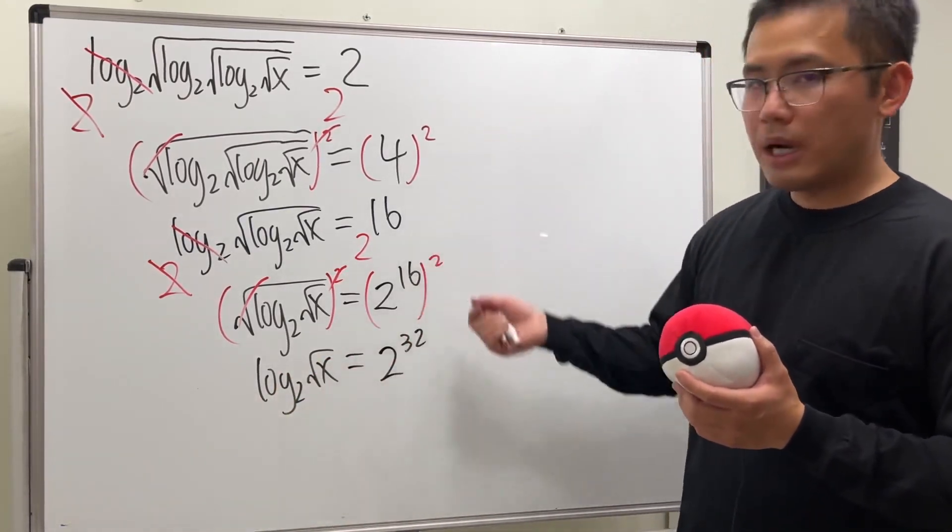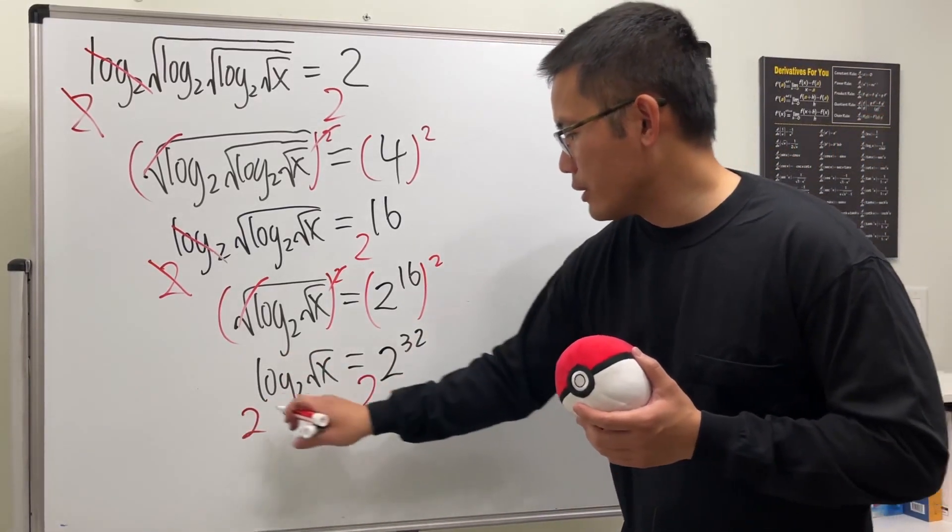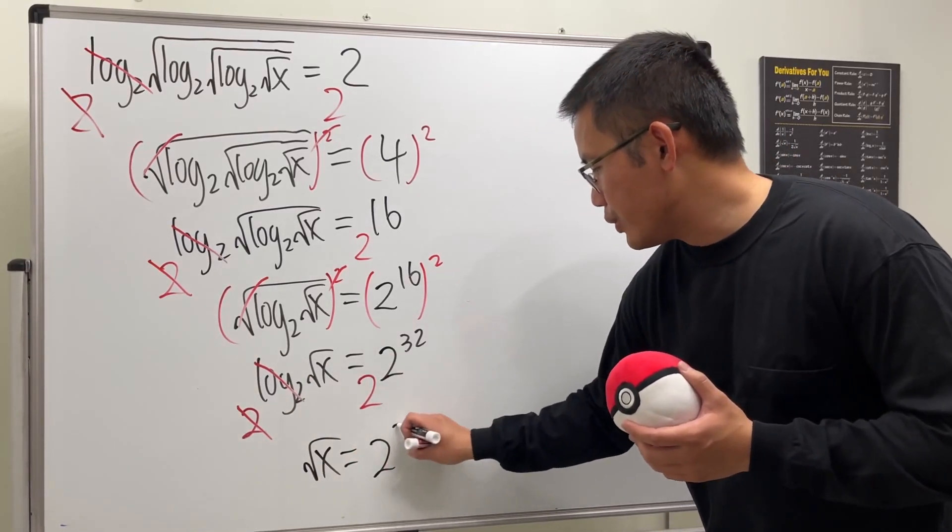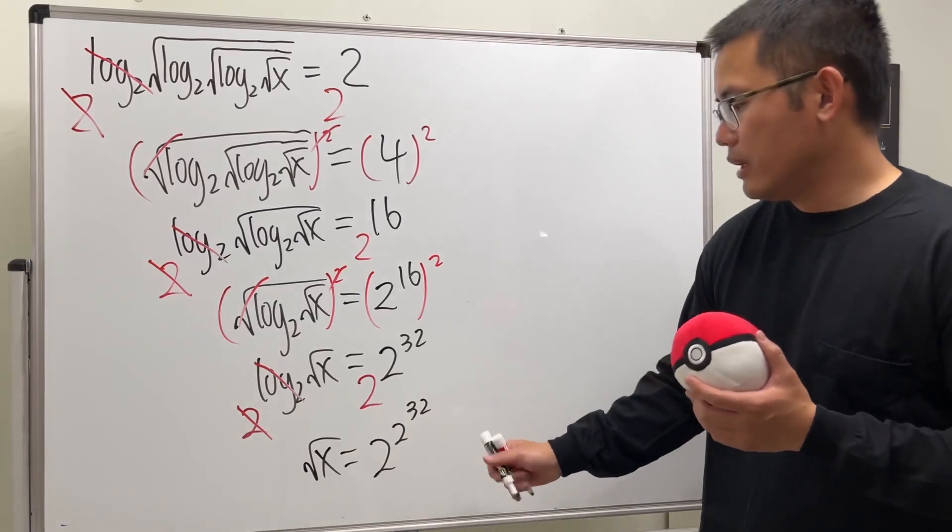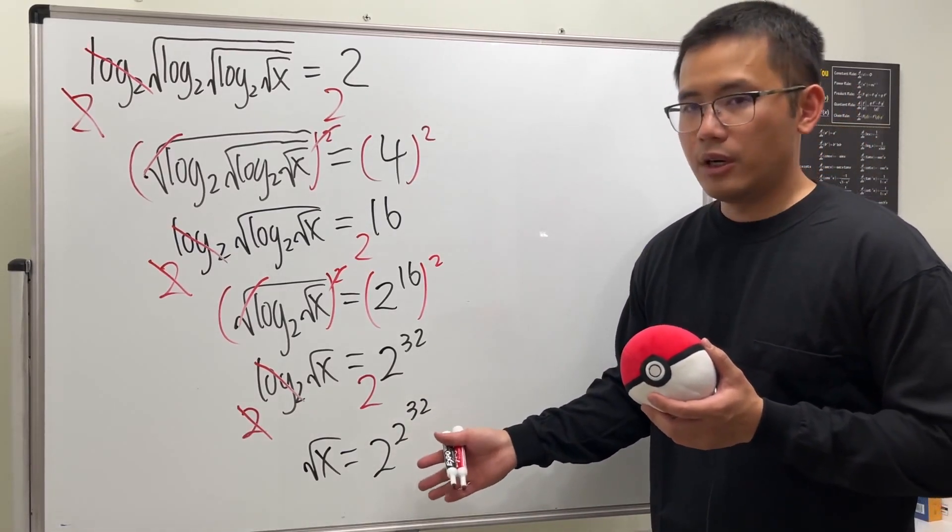When we do the exponentiation you build up the power. So this is what I mean: next we do 2 to that power, 2 to that power. So what we are going to get is square root of x being equal to 2 to the 2 to the 32nd power. And please don't ask me to complete this, I have no idea how big this number is.